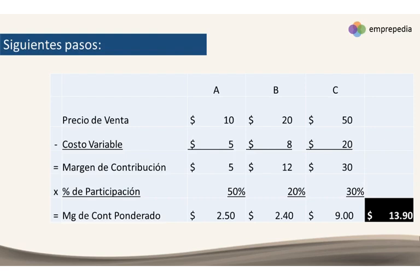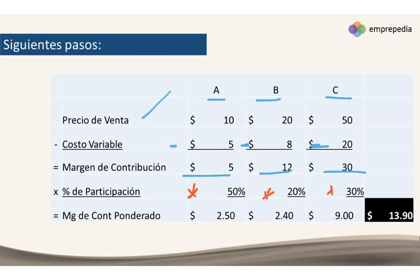Debemos conocer el precio de venta unitario por cada uno de los productos. Luego le restamos los costos variables unitarios de cada uno, y con eso vamos a conseguir el margen de contribución de cada producto. Ya que tenemos ese margen de contribución, recordamos que habíamos conseguido esas participaciones — esos porcentajes — así que ahora los pasamos a la tablita y los vamos a multiplicar. Del resultado de esas multiplicaciones nos van a dar unos márgenes de contribución, y después los sumamos para obtener el margen de contribución ponderado.